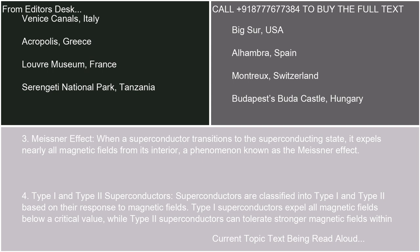4. Type I and Type II Superconductors: Superconductors are classified into Type I and Type II based on their response to magnetic fields. Type I superconductors expel all magnetic fields below a critical value, while Type II superconductors can tolerate stronger magnetic fields within certain limits.